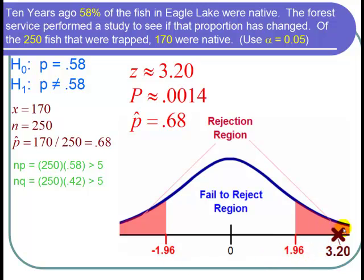Notice that our z value is in the rejection region, the shaded in region, and not in the fail to reject region. So we can see from the picture that we are going to reject the null hypothesis.